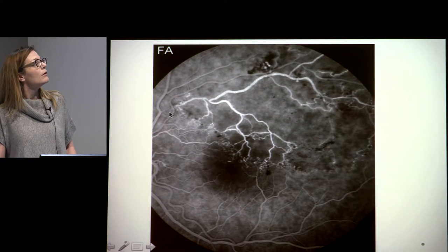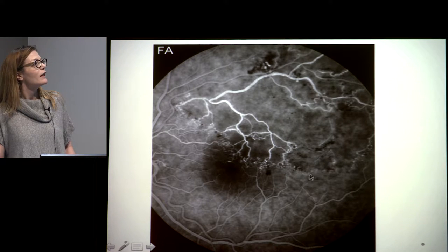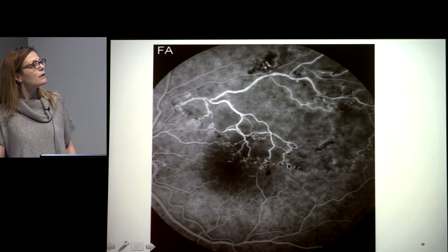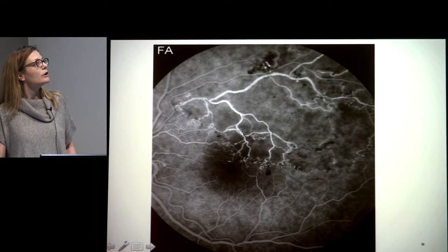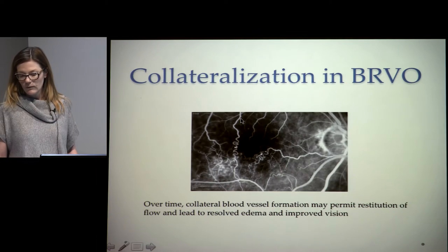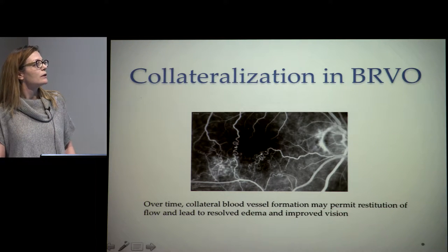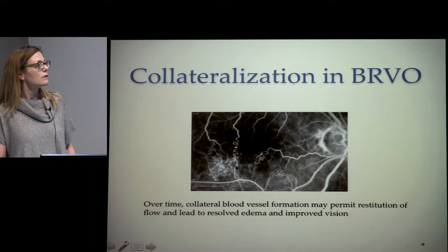Another patient has had a vein occlusion for 10 years. You can see pruning of the vascular tree and a dilated, tortuous downstream vessel. This collateralization and pruning is typical of chronic changes from a vein occlusion. A nice angiogram shows collateralization just outside the foveal vascular zone, which can actually lead to resolution of macular edema and a better visual prognosis once it develops.